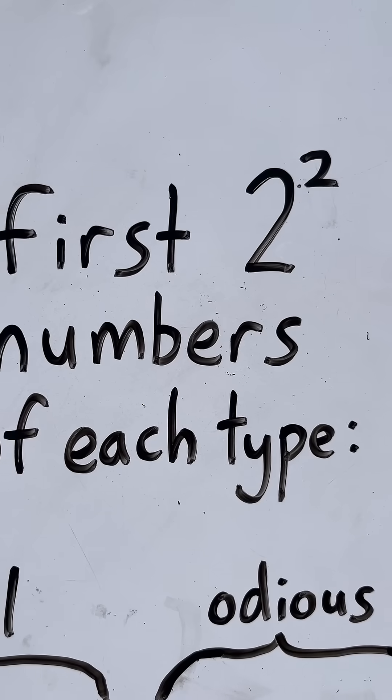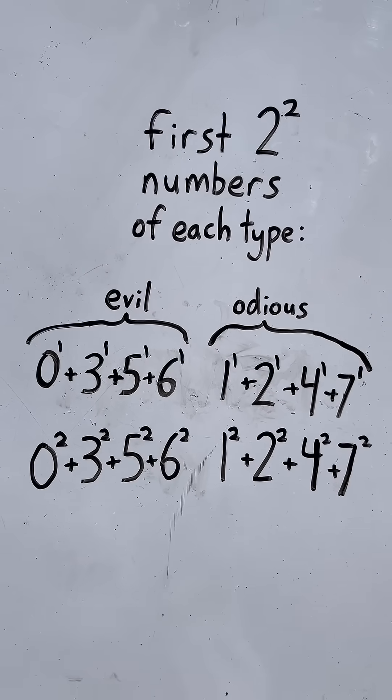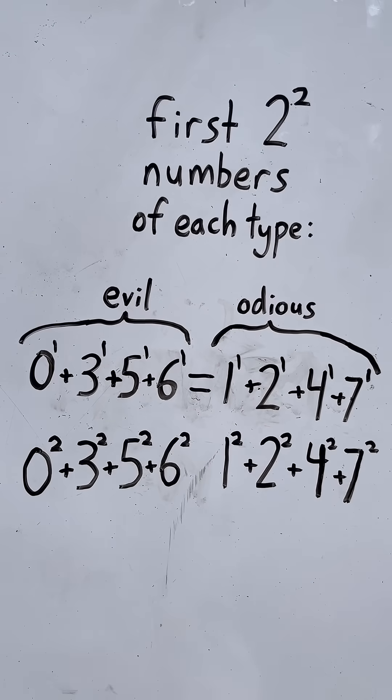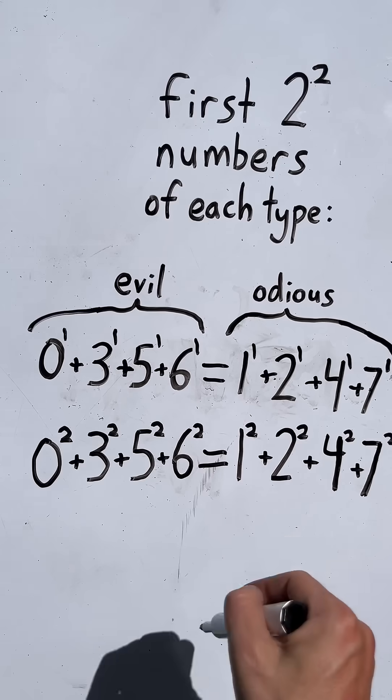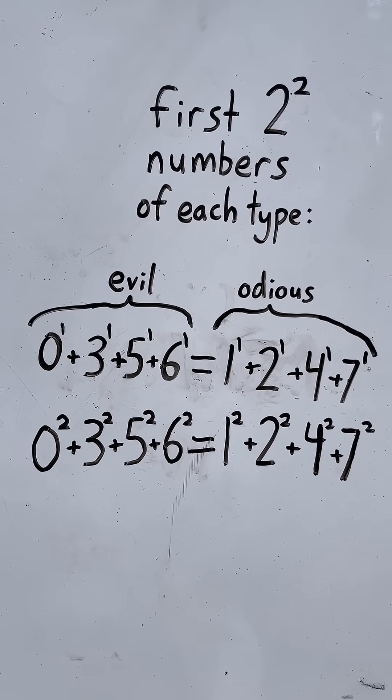Because if you take the first four, which is 2 to the second power amount of each type, you'll find that not only do the first four evil numbers add up to the same thing as the first four odious numbers, but also the squares of the first four evil numbers add up to the same thing as the squares of the first four odious numbers.